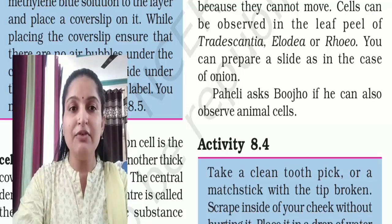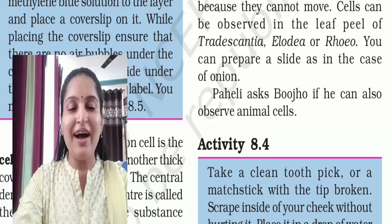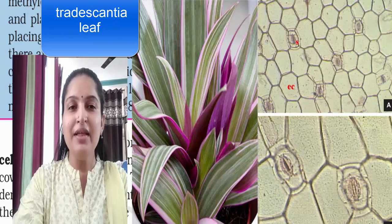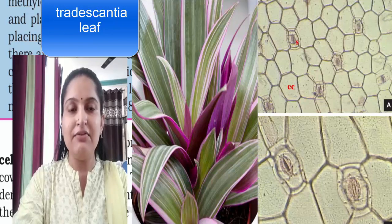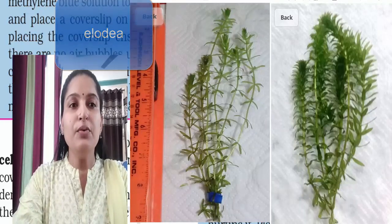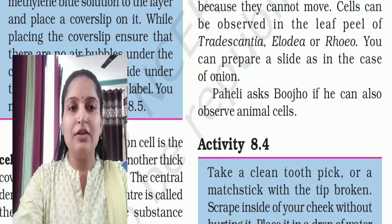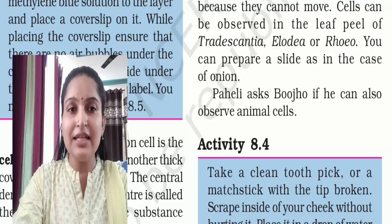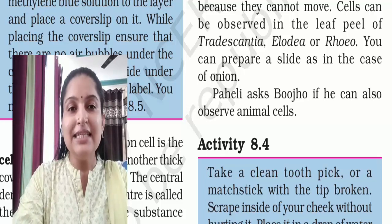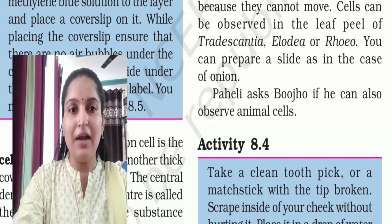In these plants, you can also observe the cells under a microscope. You can prepare a slide just as in the case of onion cells. These cells will be visible only under the microscope. Now they ask Bujo: can we also observe animal cells? Yes, we can — we can observe animal cells the same way we observed plant cells.